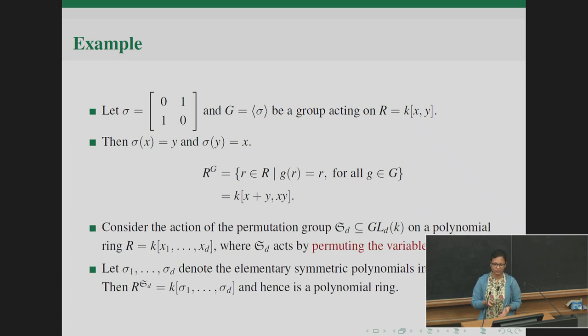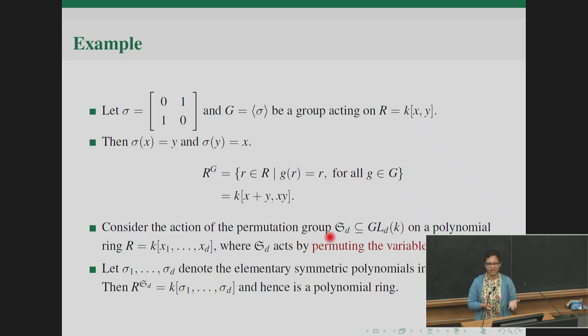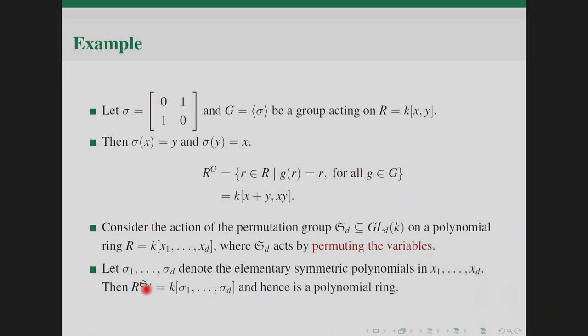We can do this in more generality: if we have a polynomial ring in d variables with the symmetric group S_d acting by permuting the variables, then R^G is the polynomial ring generated by the elementary symmetric polynomials. This is one of the classical and motivating examples for finding more cases where the invariant ring turns out to be a polynomial ring.